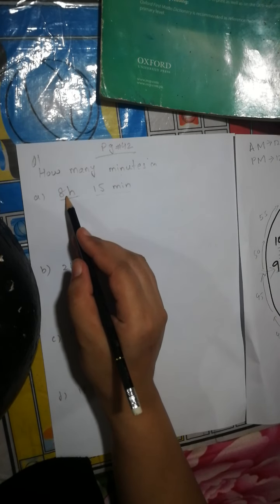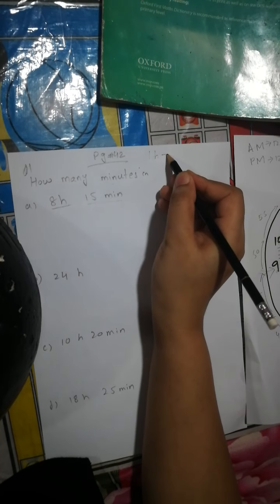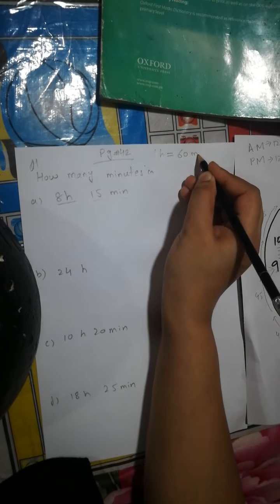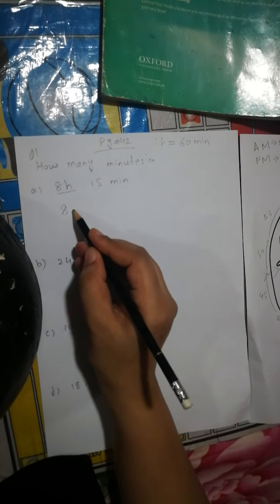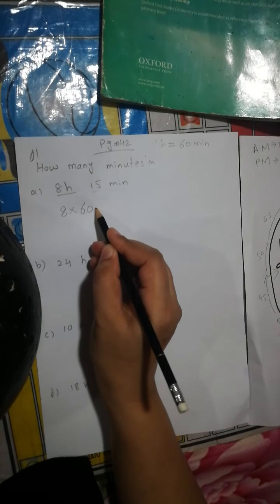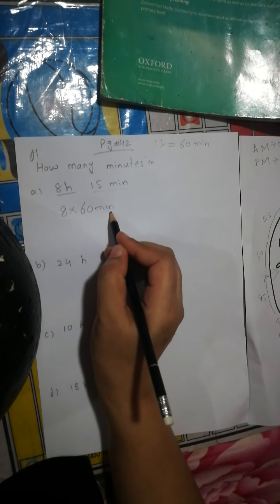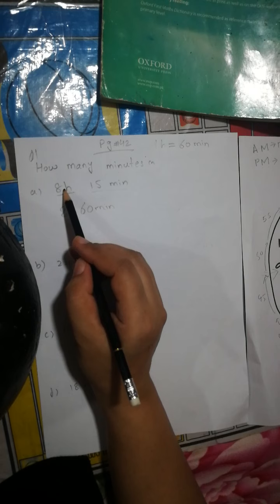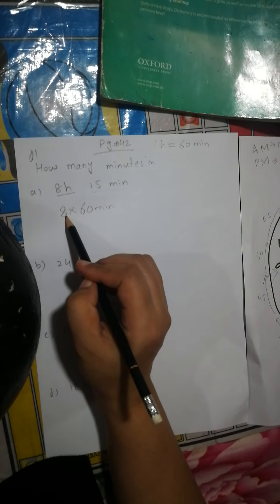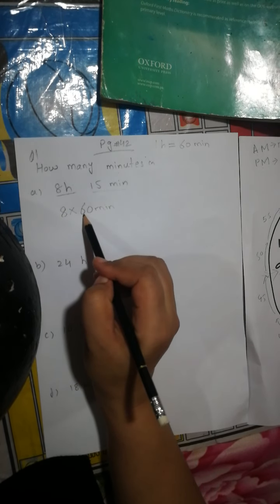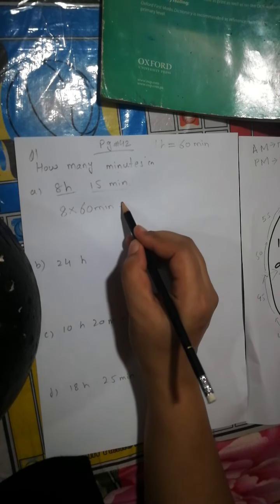At the place of H, because we know that one hour is equal to 60 minutes, we will write multiply 60 minutes at the place of H. For example, 8H means 8 multiply H, so the same way 8 multiply 60 — at the place of H we write 60 minutes. The time already given in minutes stays as it is.